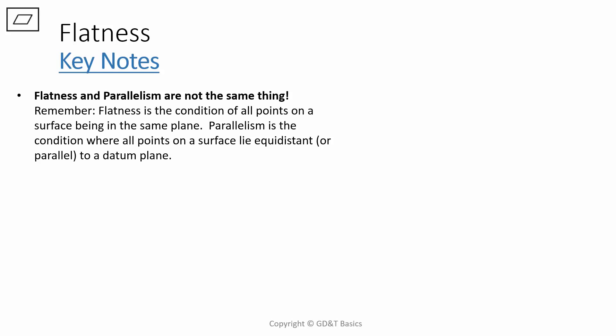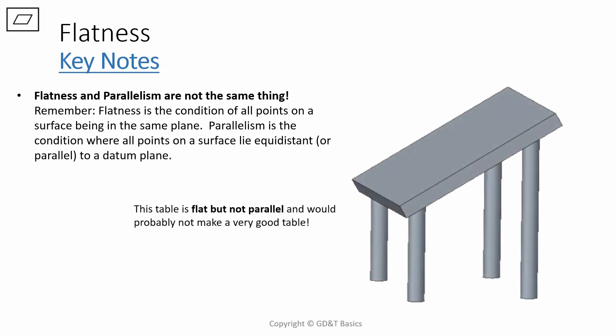One common mistake when applying flatness is confusing it with parallelism. Flatness and parallelism are not the same thing. Remember, flatness is the condition of all points on a surface being in the same plane. Parallelism is the condition where all points on a surface lie equidistant, or are considered parallel to a datum plane. The orientation of your tolerance zone now matters. To put this simply, this table is flat but not parallel, and would probably not make a very good table. The surface is flat but not parallel to the floor, which in this case would be considered the datum. Just remember, parallelism is not equal to flatness.